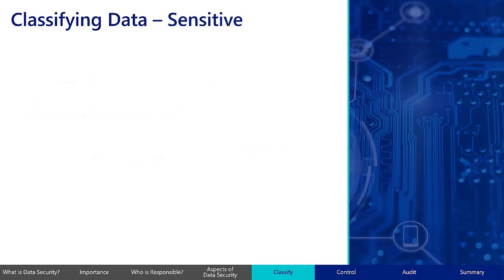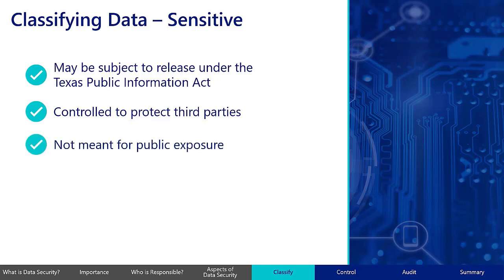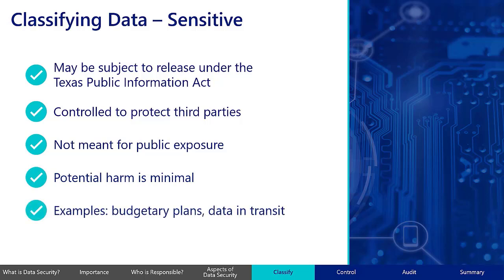Sensitive data is information that could be subject to release under the Public Information Act, but should be controlled to protect third parties. This is data that isn't meant for public exposure, and while there may be some level of harm if exposed, the potential harm is relatively minimal. Examples may include an organization's budgetary plan or data in transit before it has been published for public use.